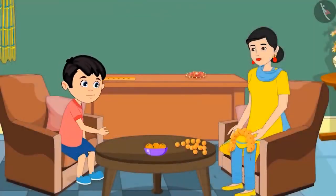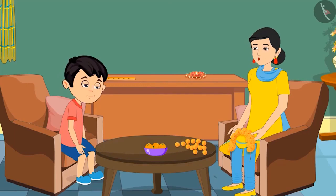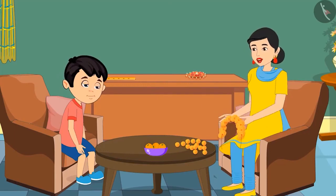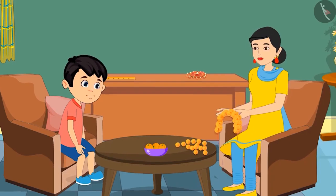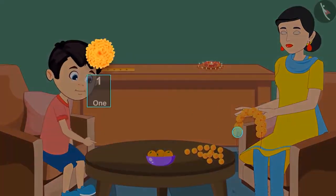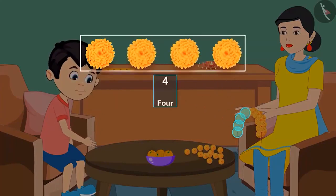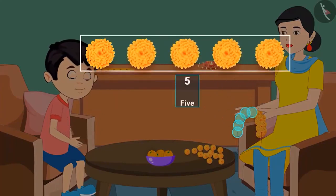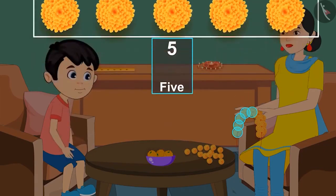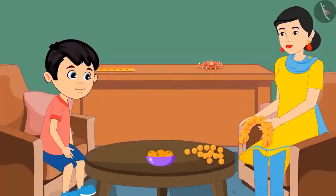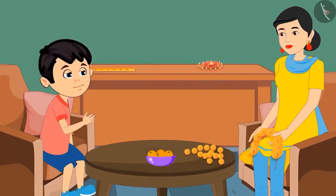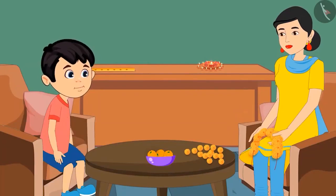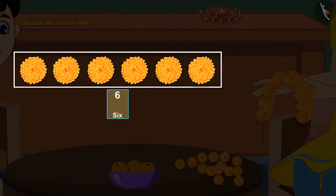Chotu asks to help make the garland. His mother asks him to count the flowers first. He counts to five but doesn't know the rest. His mother explains: with five flowers, if we bring one more it becomes six; one more makes seven; one more makes eight; and the last one makes nine. So there are nine flowers in the garland.